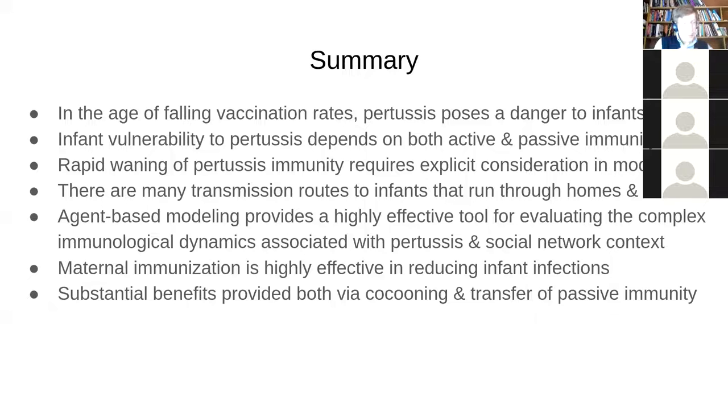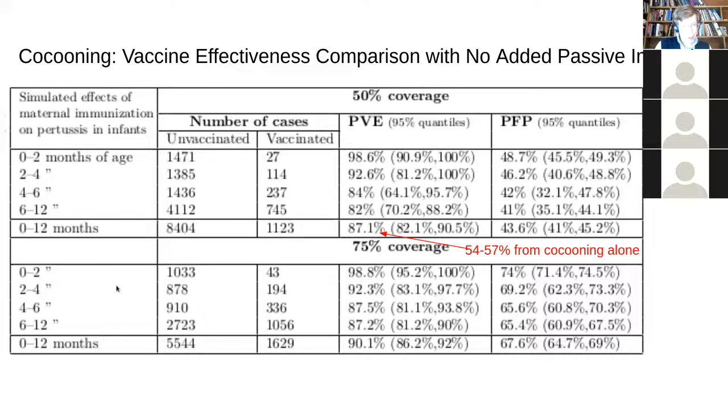And one of the things that makes pertussis so difficult to deal with is rapid waning of immunity. And by taking into these factors into account explicitly in a model and reasoning about the different transmission routes, those at homes and schools, particularly, we can evaluate the gains from maternal immunization. And demonstrate that it's actually highly effective, even given wide ranges of assumptions about possible alternative interpretations of the scientific evidence.